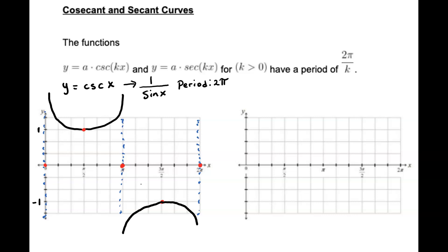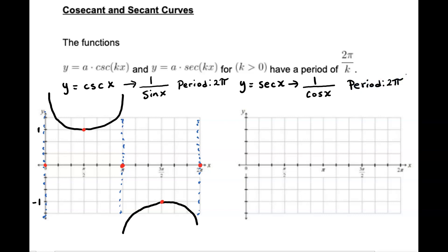A similar thing happens with the graph of secant. If I have y equals secant of x, I need to remember that secant is 1 over cosine of x, and the period of cosine is 2π — very similar to the period of secant. So we're going to graph the cosine first. Cosine starts at 1, at π/2 it hits 0, at π it hits negative 1, at 3π/2 it hits 0, and at 2π it hits 1 again. Now I'll connect the dots — it looks like an upside-down bell.